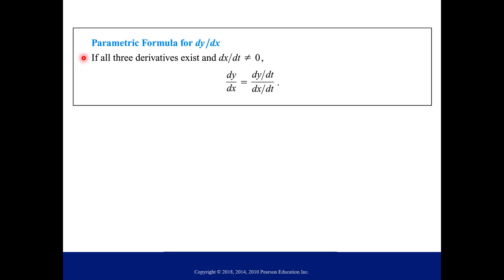So first, our formula for the first derivative if you're given parametric equations for a curve. If all three of the derivatives below exist and the derivative of x with respect to t, as long as that's not zero, then you can say the following.